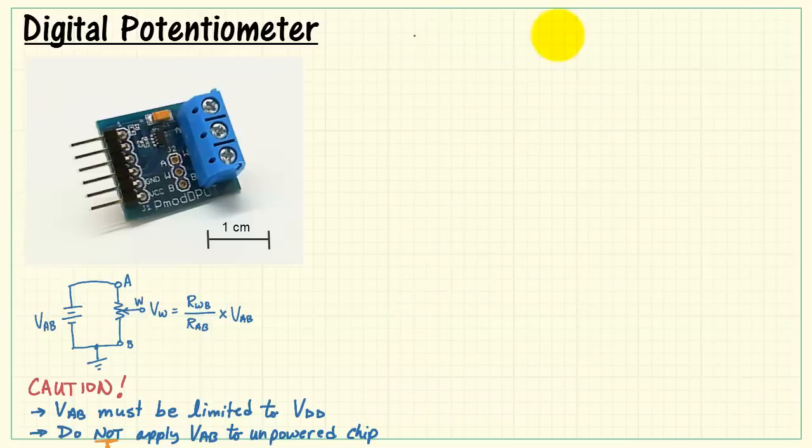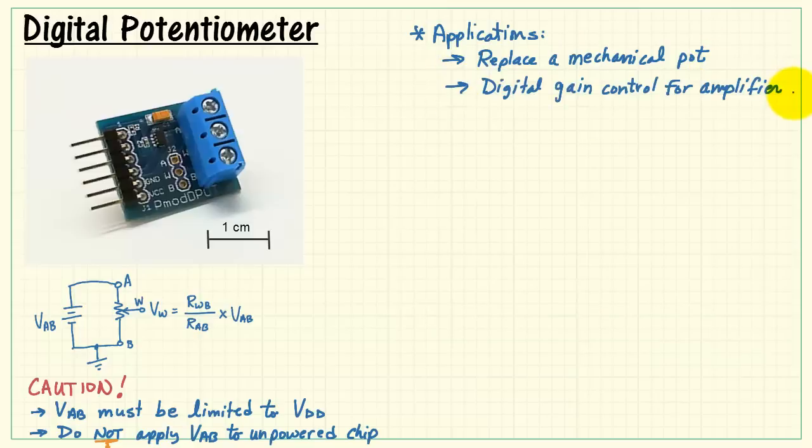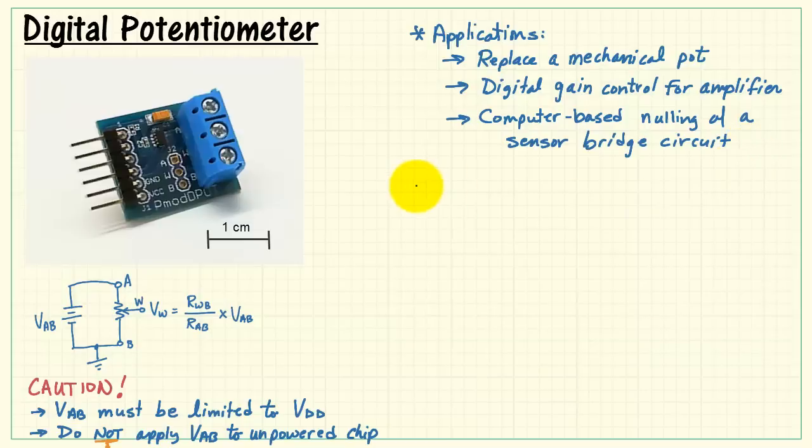There's a number of applications for a digital potentiometer. We can think of it as a useful device to replace a mechanical potentiometer. You could use it as a digital gain control for an amplifier, or you could also use it as computer-based nulling or zeroing of a sensor bridge circuit.